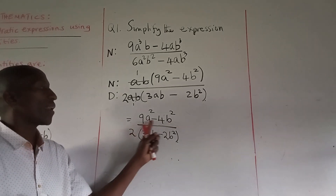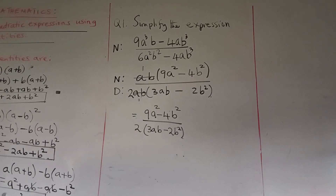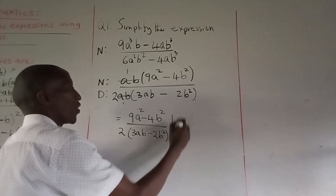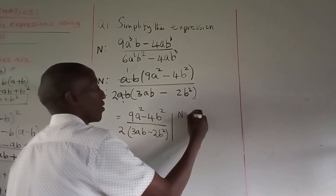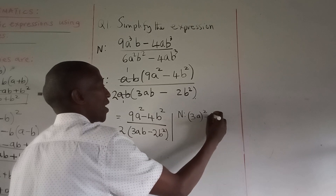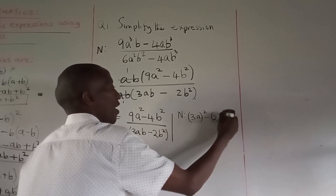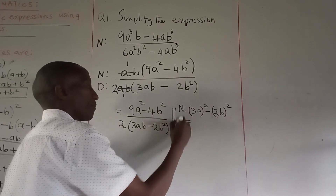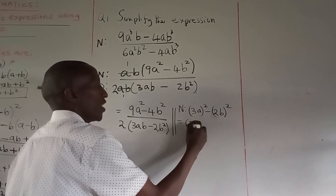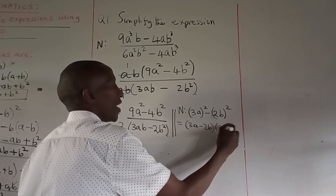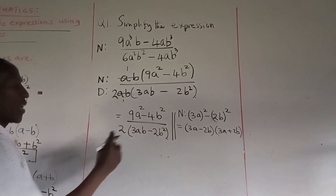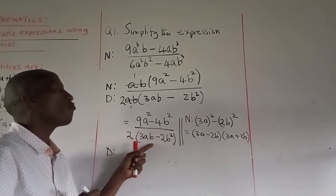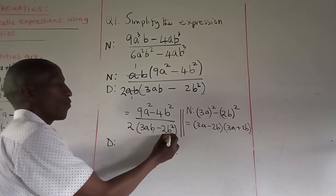In the numerator, we can spot the difference of two squares: 9a² − 4b² = (3a)² − (2b)². Therefore it factors as (3a − 2b)(3a + 2b).